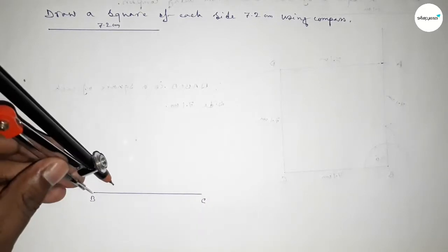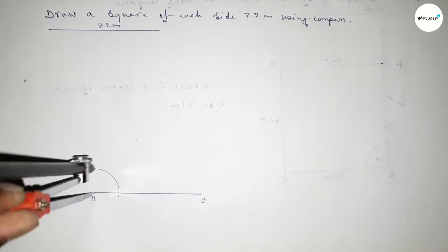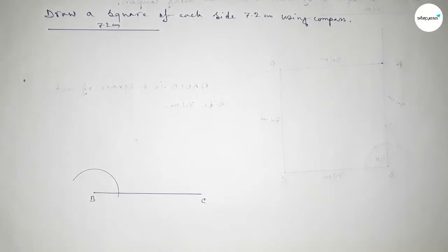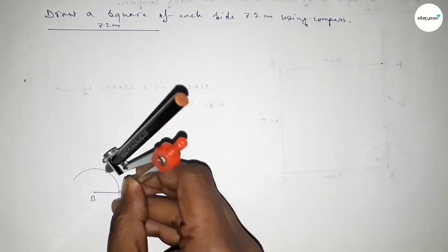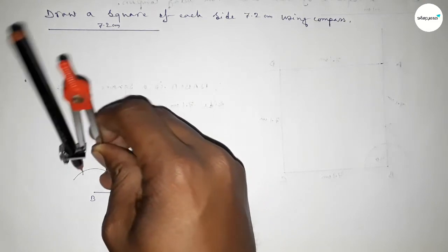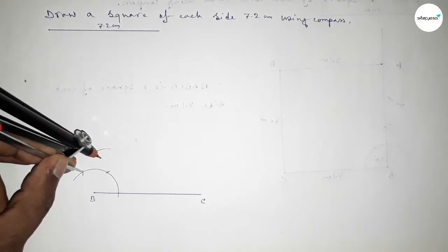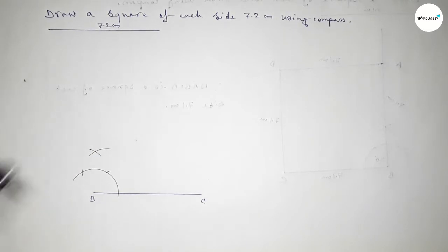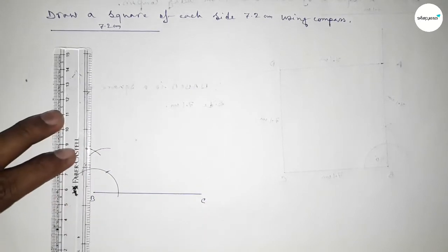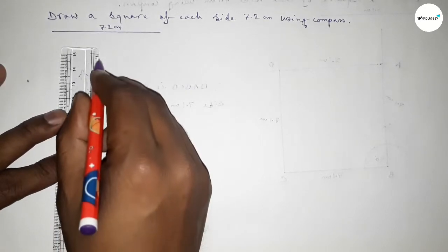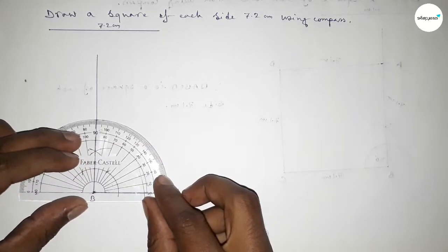Now we have to draw a 90 degree angle on point B. Putting the compass here and drawing an arc, then with the same length putting the compass here to cut, and again cutting here so both curves intersect at a point. Joining this line to get a 90 degree angle — checking — this is perfectly a 90 degree angle.